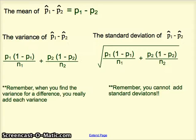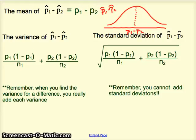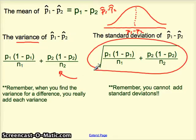Those differences have a mean and a standard deviation. When we look at the sampling distribution of differences taken from all possible samples of the same size from the same populations, those differences have a mean — in this case, that mean is the difference in the population proportions. We expect the average of all those differences in sample proportions to equal the difference in the population proportions. Those differences, if calculated over and over again, have a variance, and the formula is shown here. Taking the square root gives us the standard deviation for those differences.